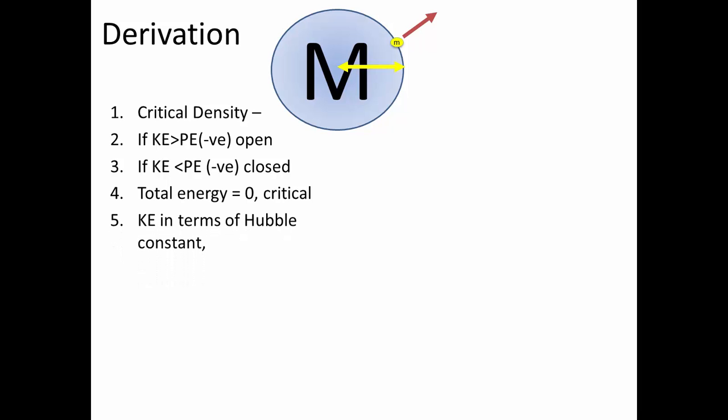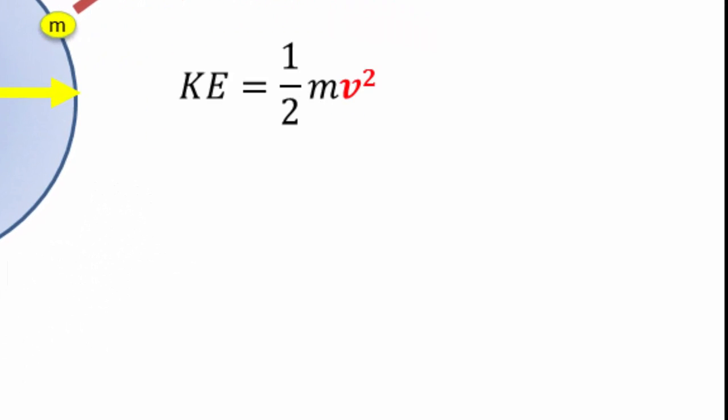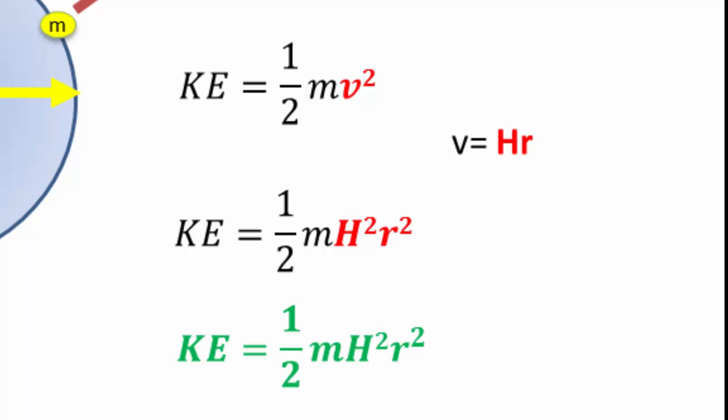The derivation is basically you have to equate the kinetic energy and the potential energy. Let's start with the kinetic energy in terms of the Hubble constant. You know that the kinetic energy of this small mass is equal to half mv squared. But you also know that the Hubble constant says that v is equal to Hr, where r is the distance from us to that mass. So we'll substitute that in there, and this is how we want to remember the kinetic energy.